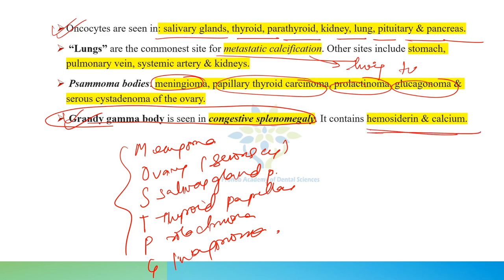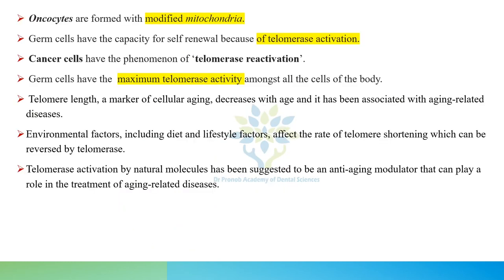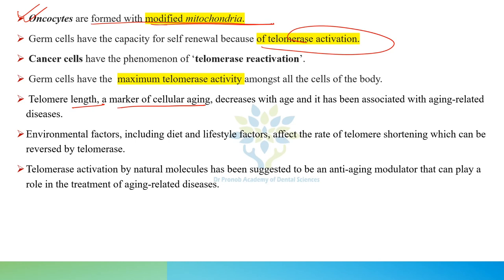Gamma-Gandy bodies are seen in congestive splenomegaly and contain hemosiderin and calcium. Oncocytes are formed from modified mitochondria. Telomere length is a marker of cellular aging — it decreases with age and has been associated with aging-related diseases.